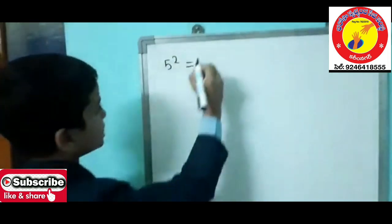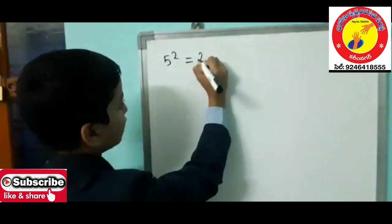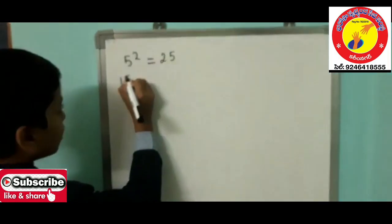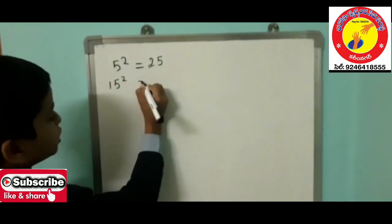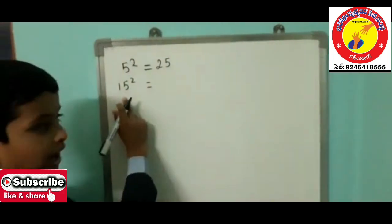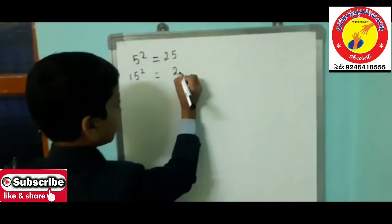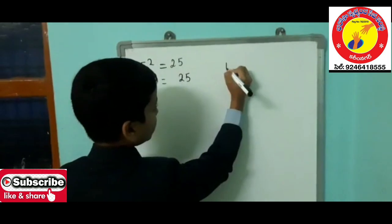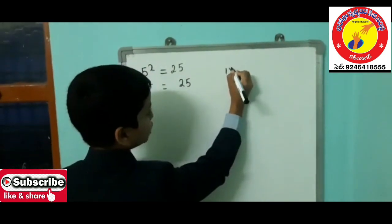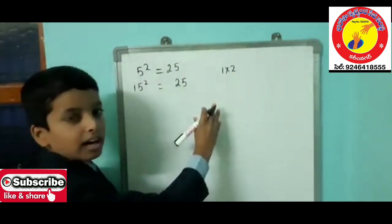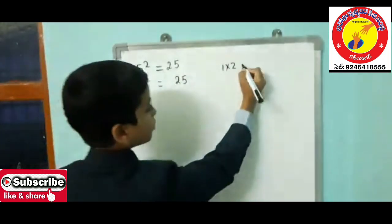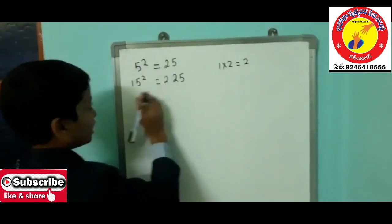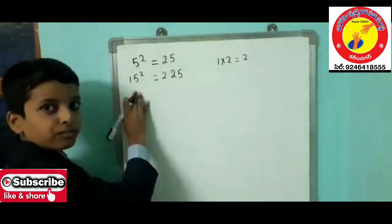5 squared is 25. For 15 squared: 5 squared is 25, and the tens digit is 1. The next number after 1 is 2, so we multiply 1 and 2 — 1 times 2 is 2. Therefore 225 is the square of 15.